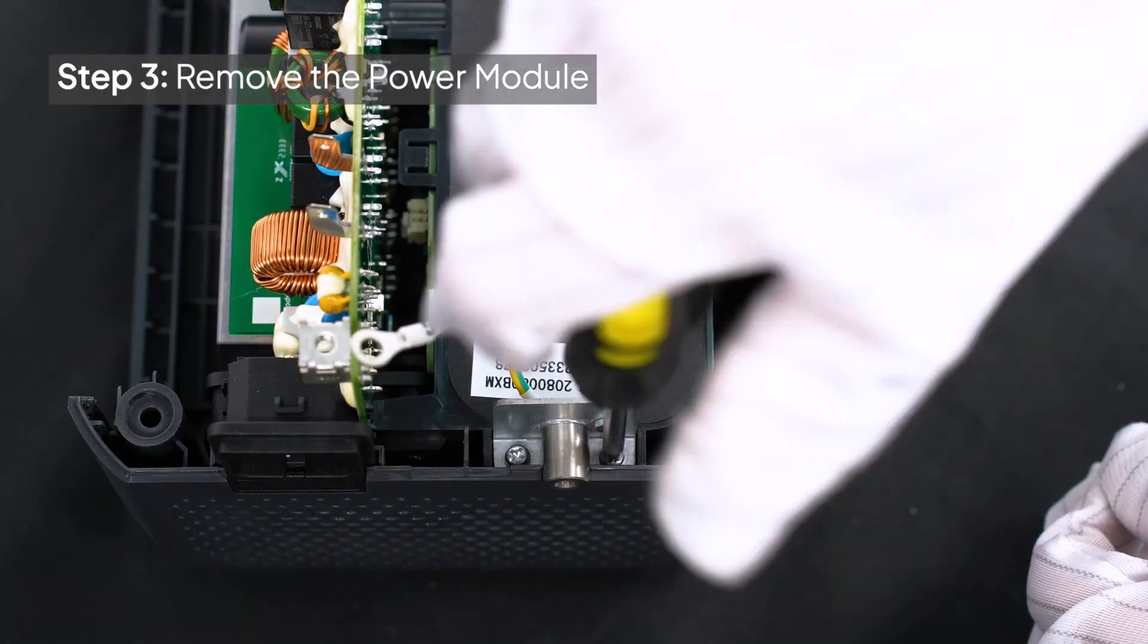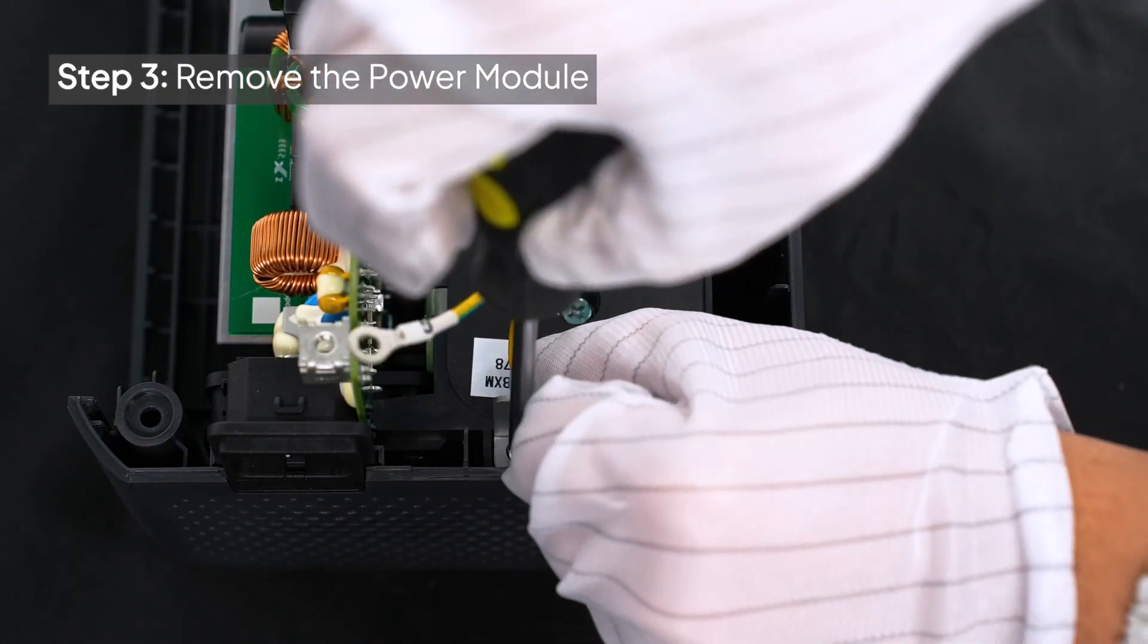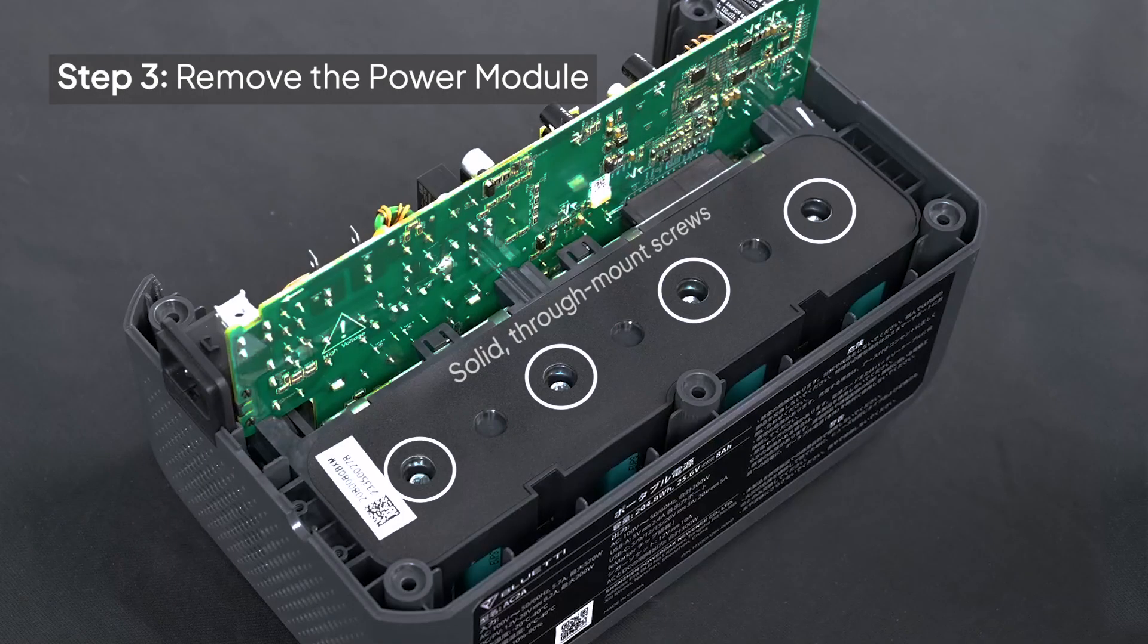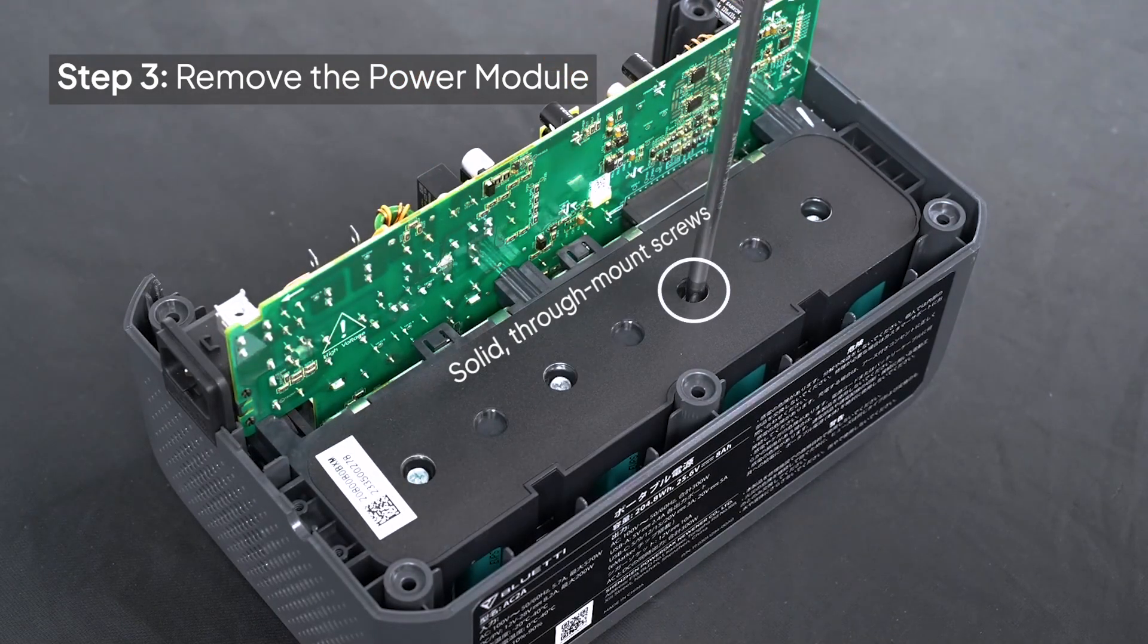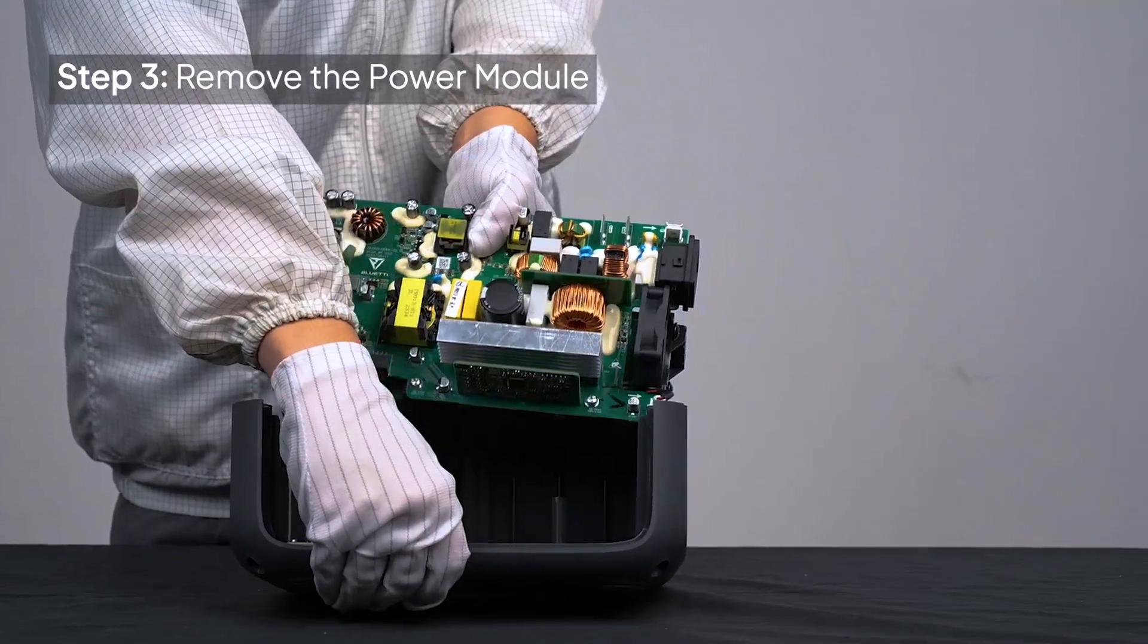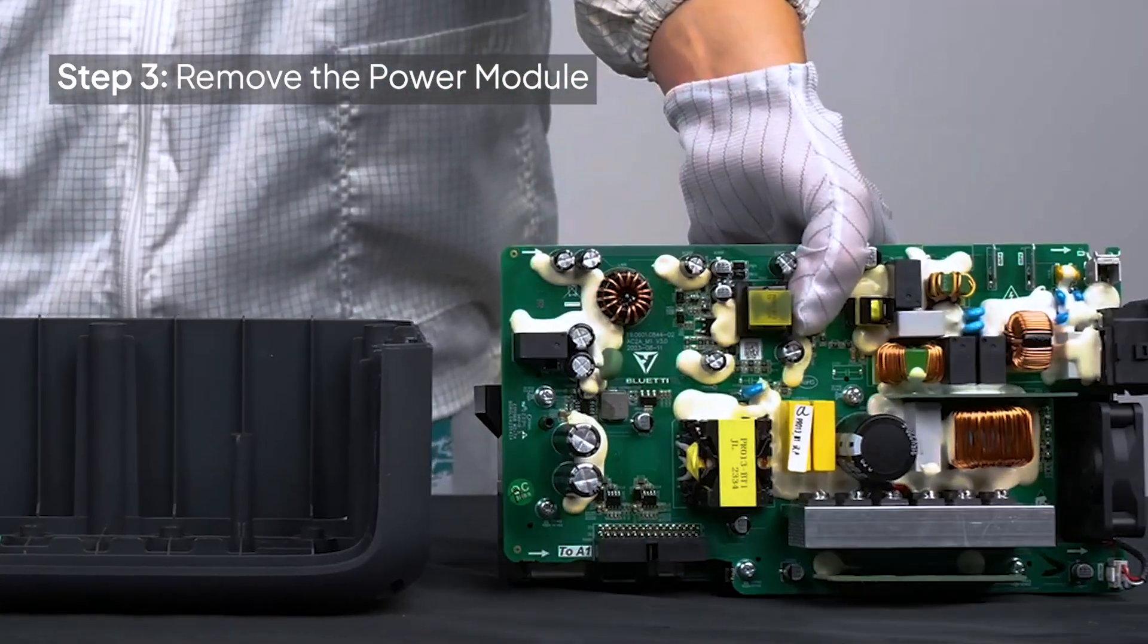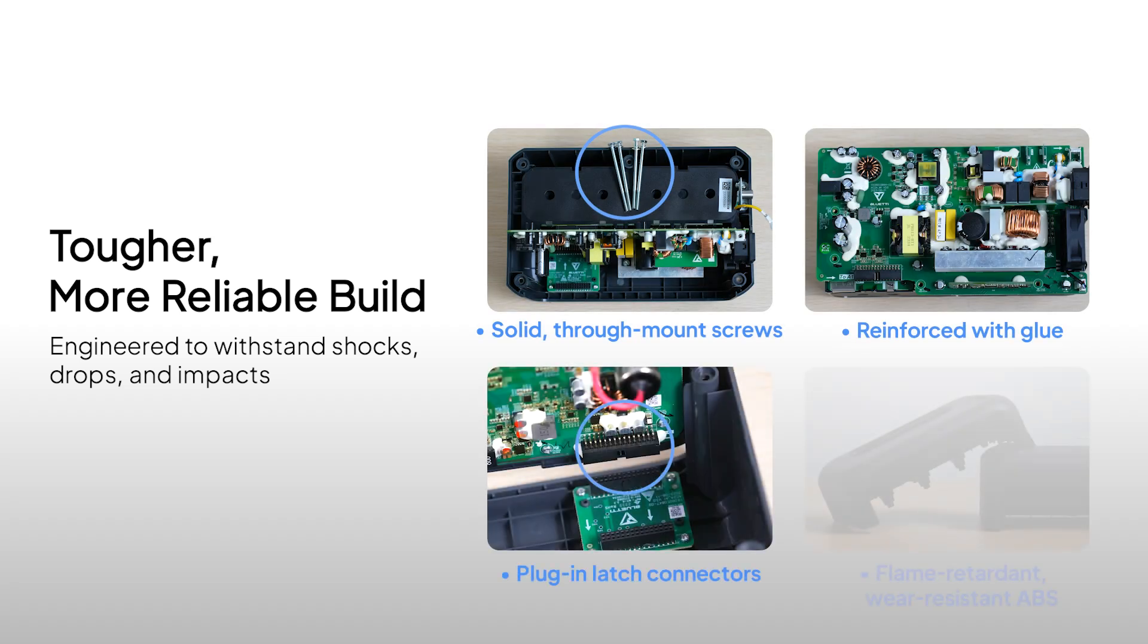Detach the power module from the bottom cover. The AC-2A might not be the lightest out there, but it's built tough to handle the rigors of travel. The extra weight comes from premium, durable materials that make it stronger, so it performs reliably and stays protected during transport.